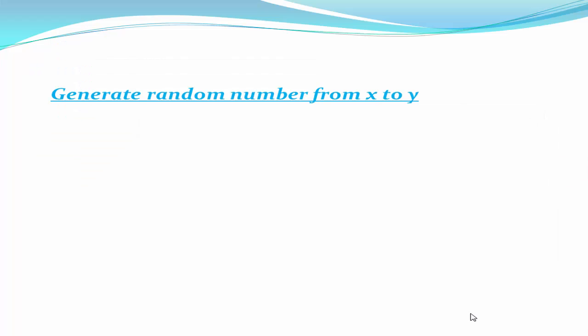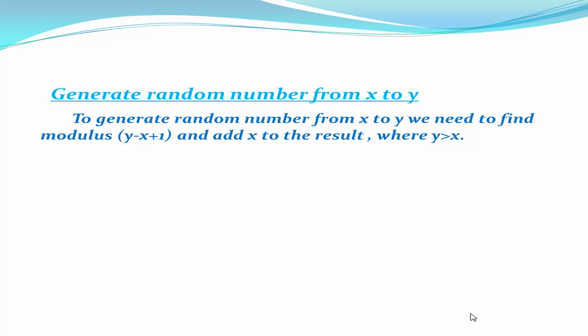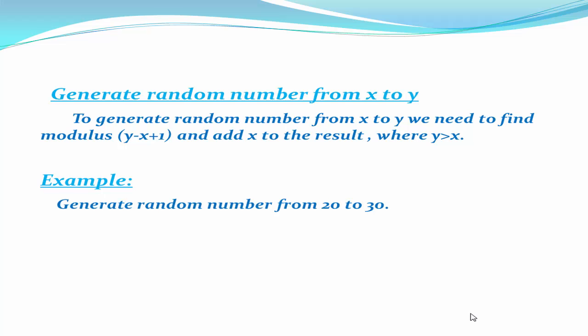Next, we generate a random number from X to Y. To do this, we find modulus of Y minus X plus 1, and then add X to the result, where Y is greater than X. For example, to generate a random number from 20 to 30, we write r equal to rand() mod (30 minus 20 plus 1) plus 20, where X equals 20 and Y equals 30.